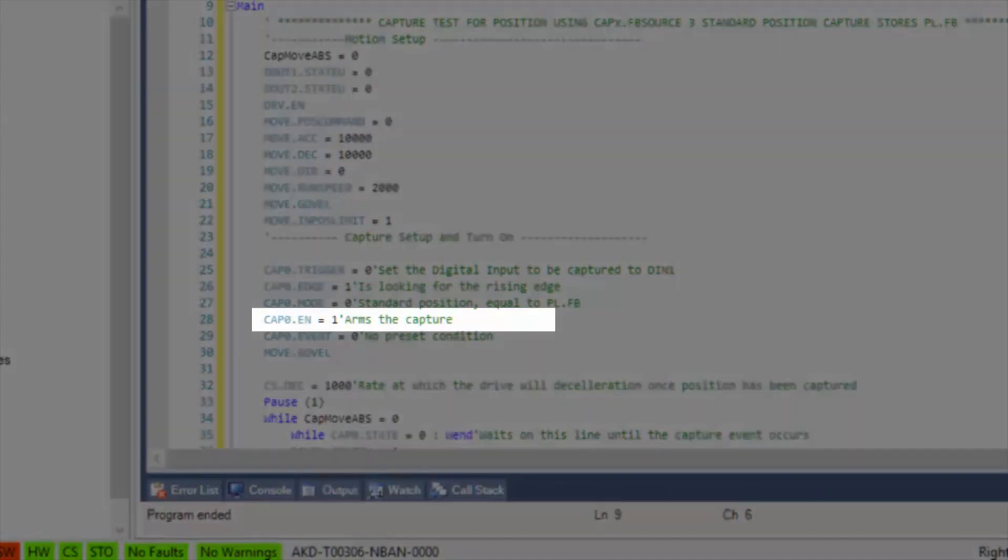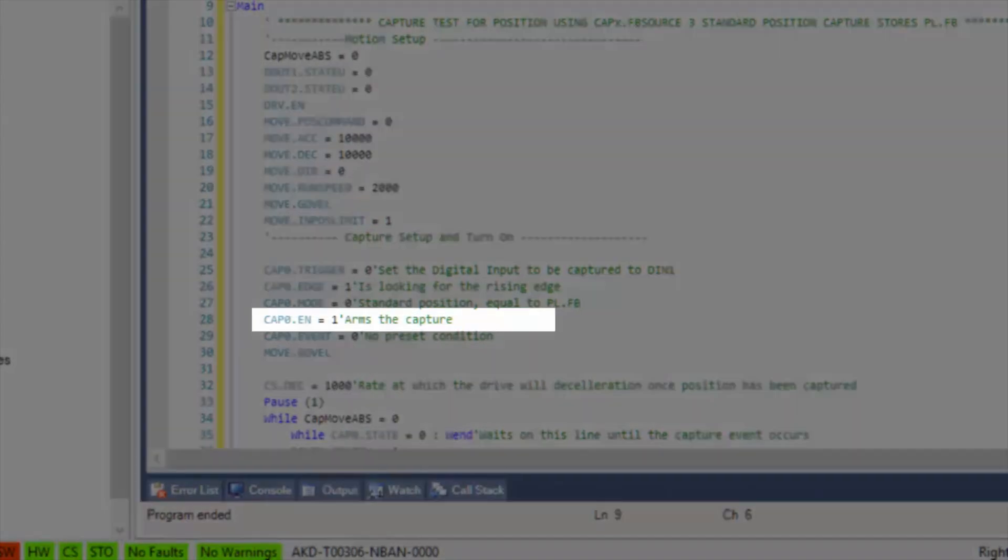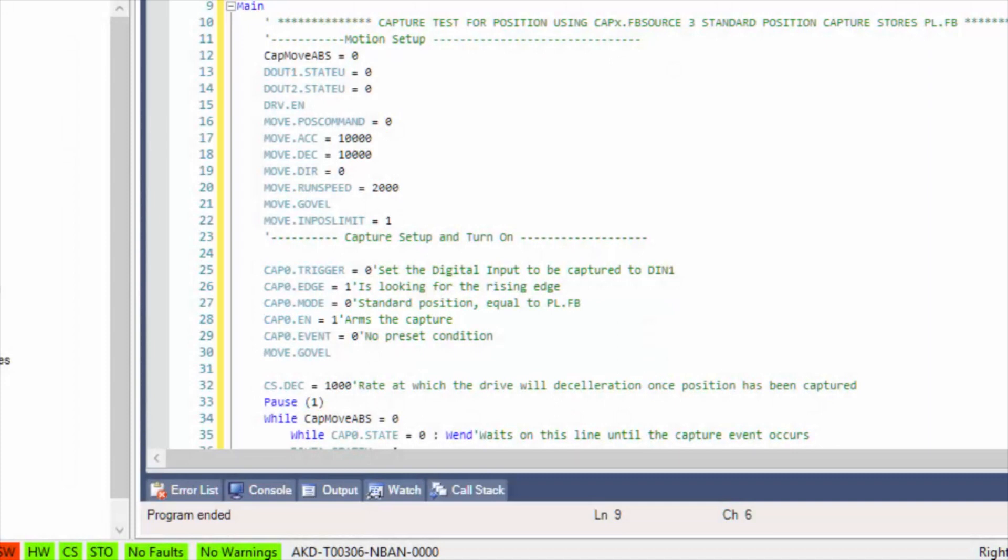Cap0.Enable equals 1 will arm the capture system. At this point the system is commanded to run at 2000 RPM.